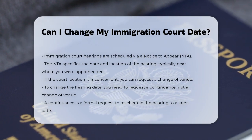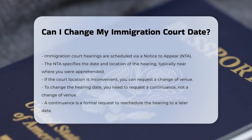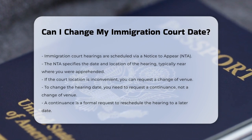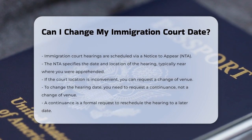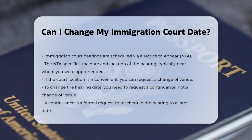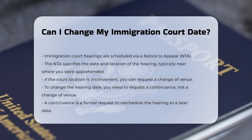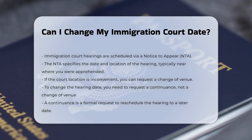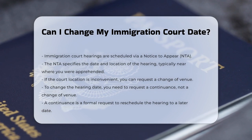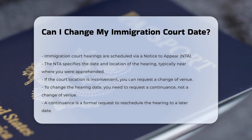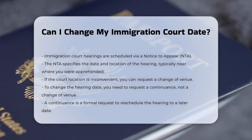When you receive a Notice to Appear (NTA), it will specify the date and location of your immigration court hearing. This is usually the court closest to where you were apprehended.